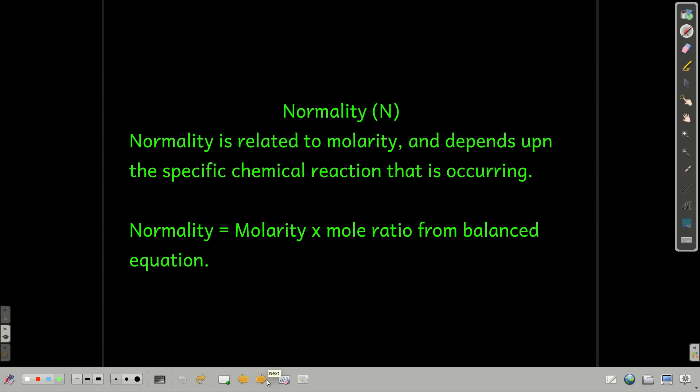All right, normality. This isn't used as much. I don't see it as much anymore, but you should know it. It may appear on the ACS, or you may sometimes see it on bottles in stock rooms, chemistry stock rooms. So normality is related to molarity. And the normality depends upon the specific chemical reaction that you're talking about. If it's an acid, it's going to be an acid-base reaction. But if it's not, sometimes in redox reactions, which we'll see later this semester, it's different. But generally, the easy way to do it is just to find the molarity and multiply it by the mole ratio from the balanced equation.